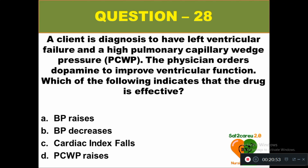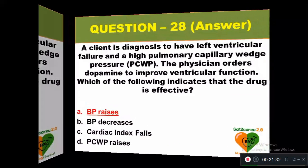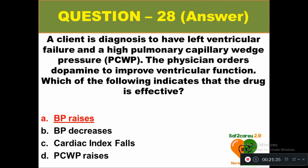Question 28: A client is diagnosed with left ventricular failure and high pulmonary capillary wedge pressure. The physician orders dopamine to improve ventricular function. Which indicates the drug is effective: option A blood pressure rises, option B blood pressure decreases, option C cardiac index falls, option D pulmonary capillary pressure rises. The right answer is option A — BP rises when you administer dopamine.